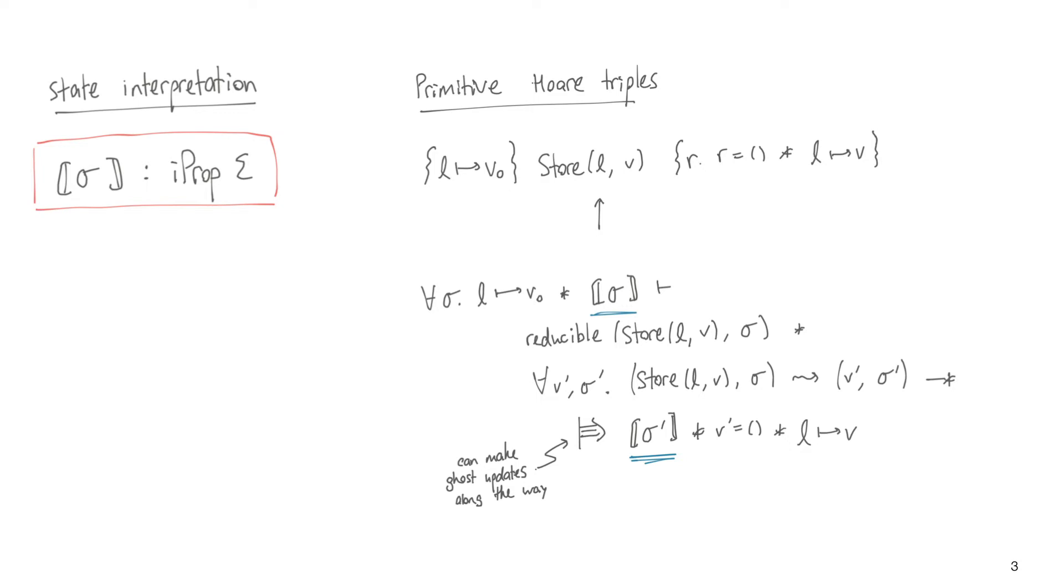We need to prove that the state interpretation holds at all intermediate steps of the program. That's what makes it so that any other threads' weakest precondition can rely on the state interpretation holding when the expression starts evaluating.